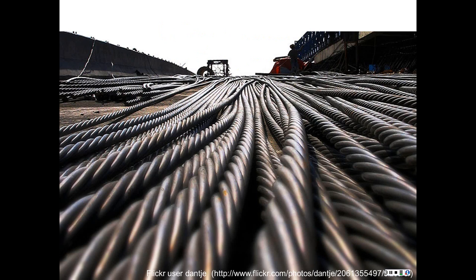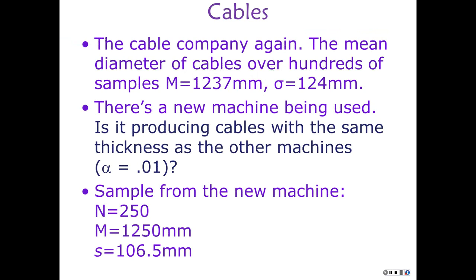Cable company example: The mean diameter is 1,237 millimeters, standard deviation 124 millimeters. A new machine is being used in the factory. Is it producing cables with the same thickness? Alpha level is 0.01 — they want to be pretty sure. The sample from the new machine has 250 cables, with a mean of 1,250 millimeters and a sample standard deviation of 106.5 millimeters. Think about how you would set this up before moving to the next slide.